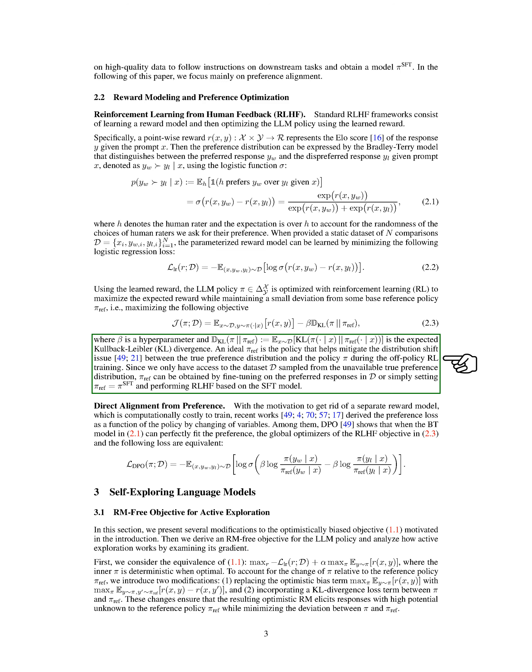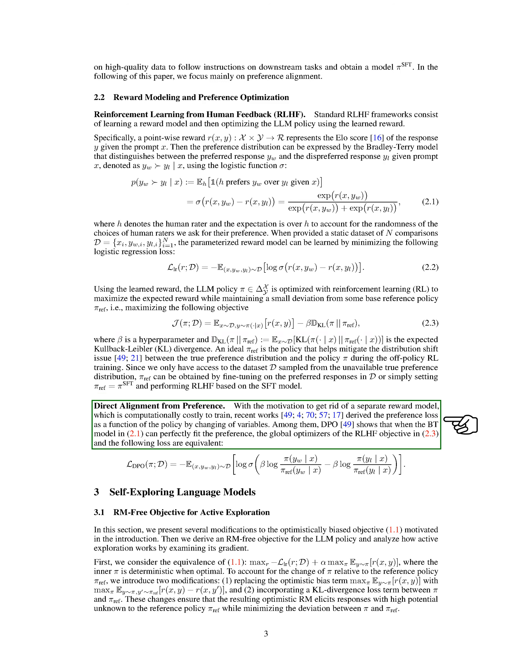When given a dataset of comparisons, we can learn the reward model by minimizing a logistic regression loss. This learned reward is then used to optimize the LLM policy through reinforcement learning. The objective is to maximize rewards while minimizing the difference from the reference policy. The reference policy helps address the distribution shift problem between the true preference distribution and the learned policy during training. Recent works have aimed to eliminate the need for a separate reward model by deriving the preference loss directly from the policy.